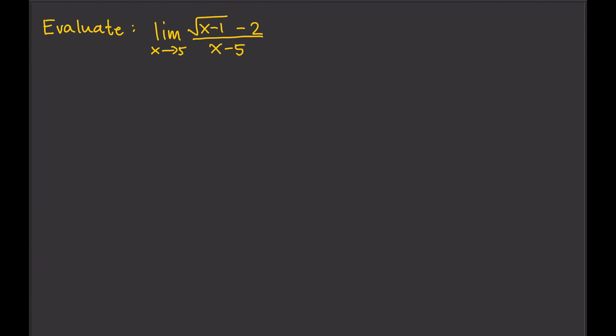Let's have another example. In this example, if we try to plug in 5 directly, that also gives us 0 divided by 0. So we can try to rationalize — in this case we're going to rationalize the numerator because the square root is in the numerator. We multiply by the conjugate of the numerator, which is square root of x minus 1 plus 2, over square root of x minus 1 plus 2.